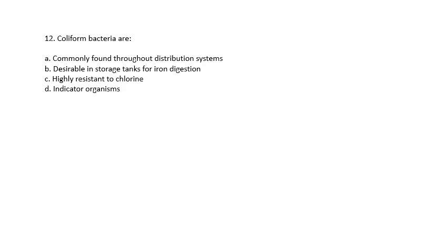Question 12: Coliform bacteria are commonly found throughout distribution systems, desirable in storage tanks for iron digestion, highly resistant to chlorine, or indicator organisms. They are indicator organisms.